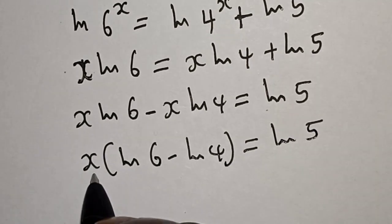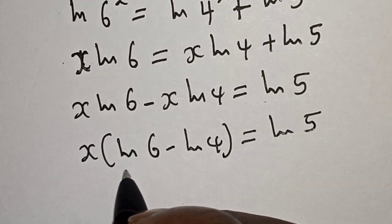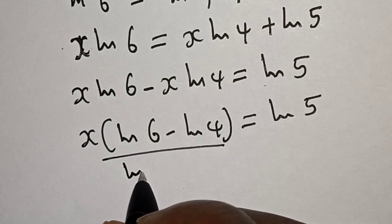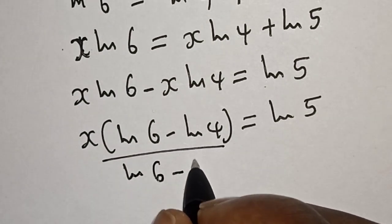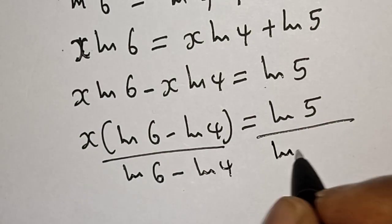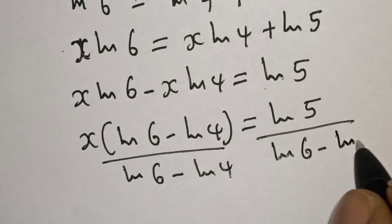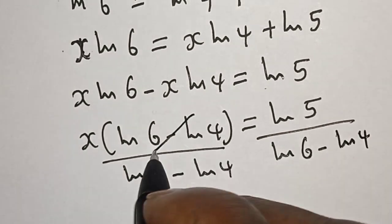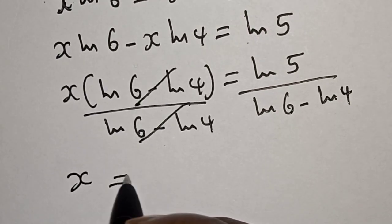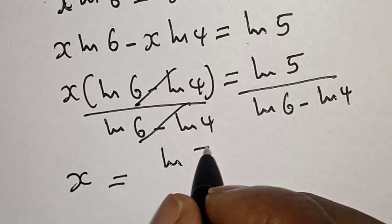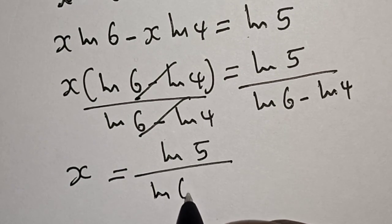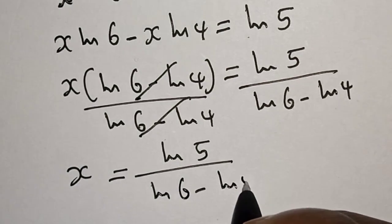Now, since we are looking for the value of x, let's divide both sides by natural log of 6 minus natural log of 4. This will cancel. Therefore, x is equal to natural log of 5 over natural log of 6 minus natural log of 4. And that is our final answer.